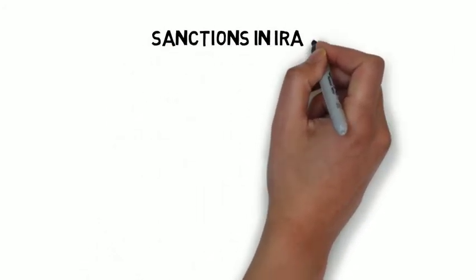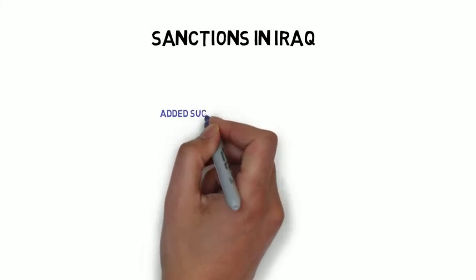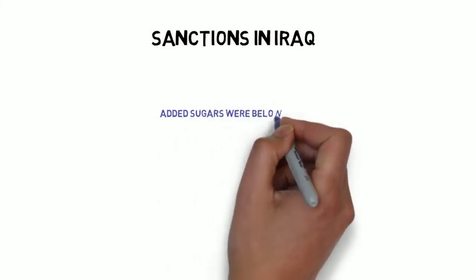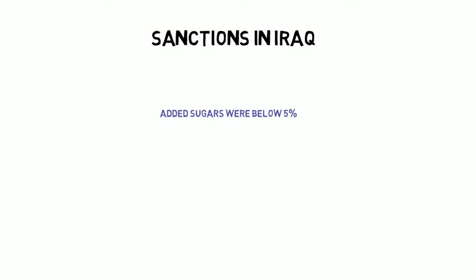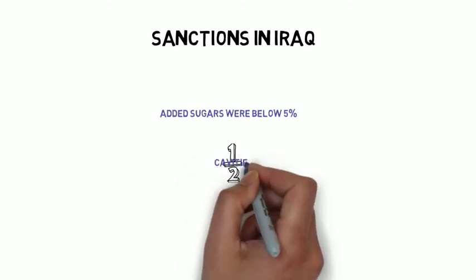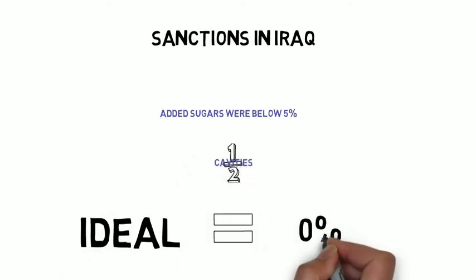During the sanctions in Iraq, the average added sugar intake actually did drop below 5%, giving us a good representation. And this cut the cavity rates in half. So while this recommendation does help, the ideal amount would be 0%.